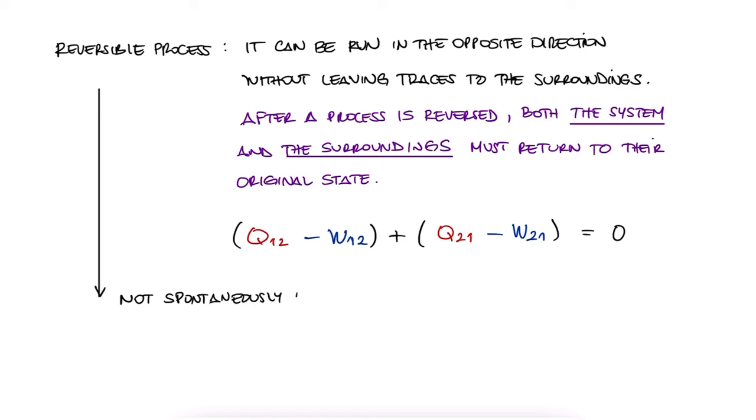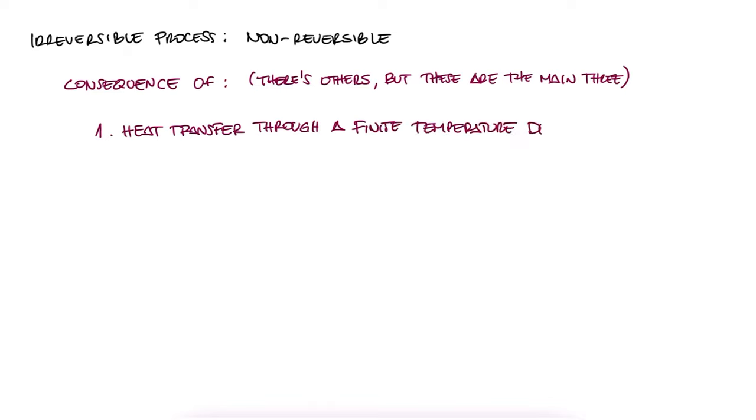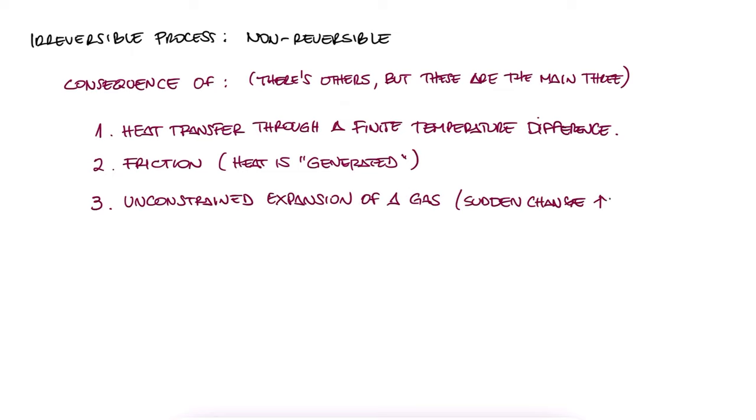Of course, in nature there are no reversible processes. Irreversible processes are those that are not reversible, and in thermodynamics they are usually a result of any of these three things: heat transfer through a finite temperature difference, friction which results in heat transfer, or an unconstrained expansion of a gas to a lower pressure.